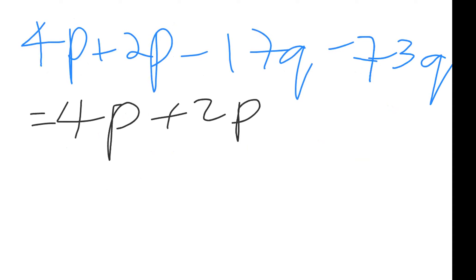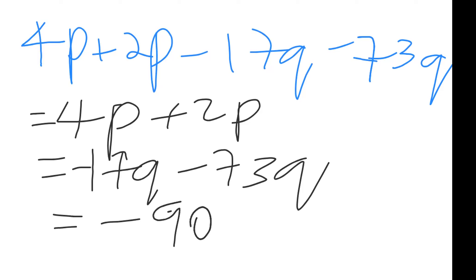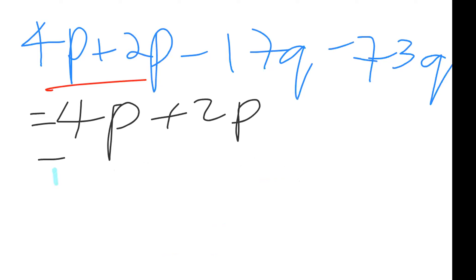C says 4p plus 2p minus 17q minus 73q. Let me show you something that someone did. They did this: 4p plus 2p equals negative 17q minus 73q, putting the answers in different lines, and then at the last part they have negative 90q. So you see that their answer doesn't even have a p in it, so that can't work.